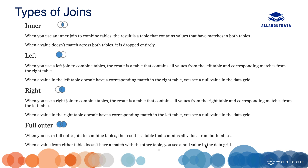Left join returns all the values from the left table and the matching values from the right table. When a value in the left table doesn't have a match with the right table, you will see a null value. Right join is the opposite — it returns all the values from the right table and the matching values from the left table. When a value in the right table doesn't have a match, you will see a null value.